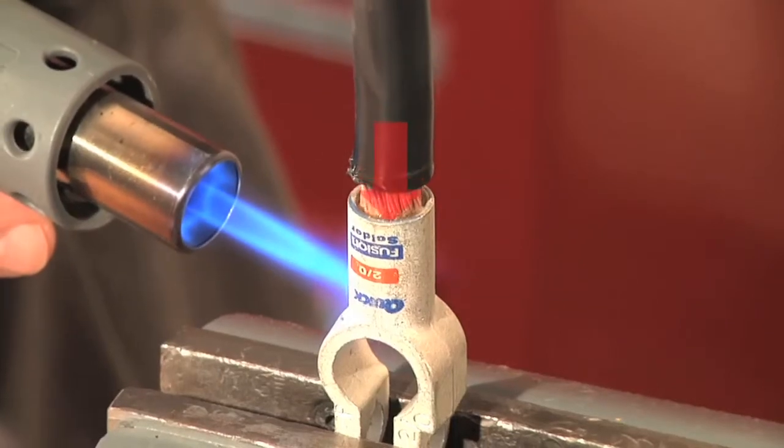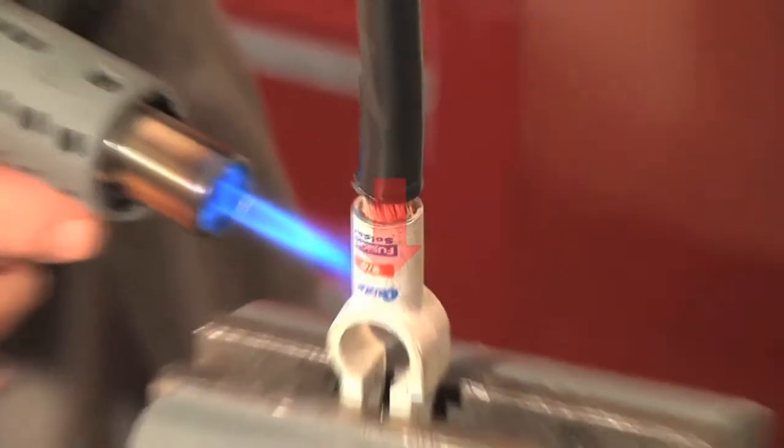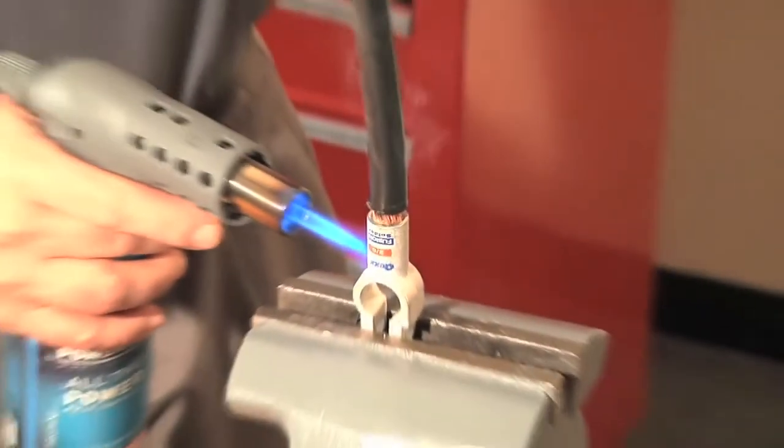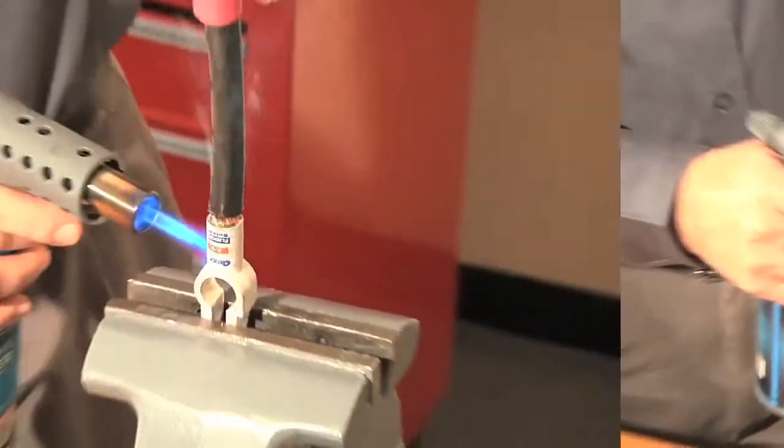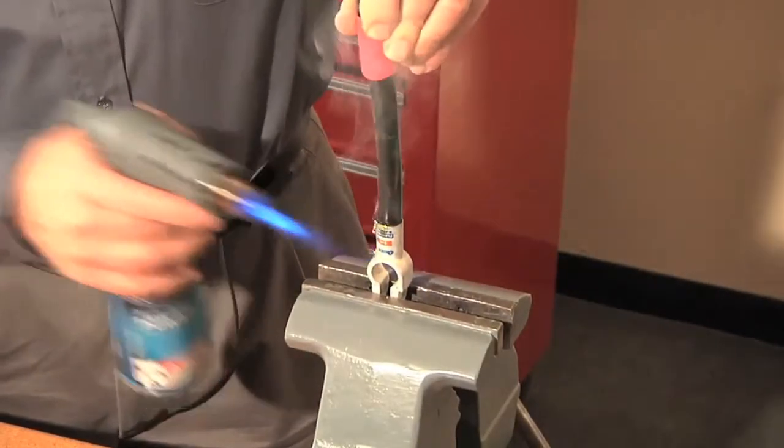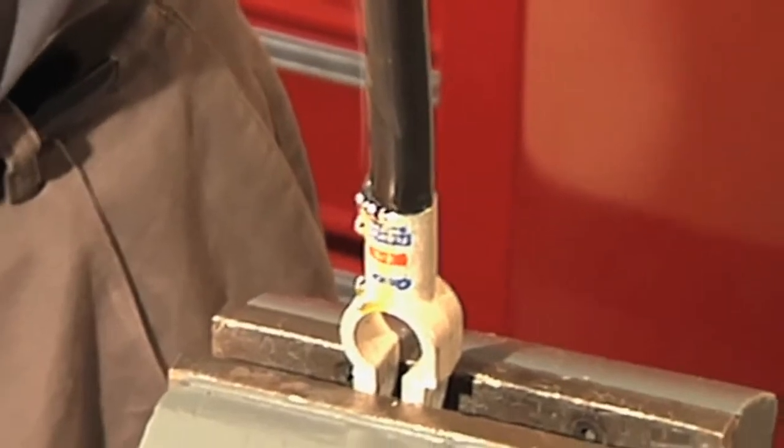Make sure to apply slight downward pressure as you spin the cable back and forth. This will ensure an equal distribution of the solder. Do not push too hard as you could lose solder should it flow out of the barrel due to too much pressure.